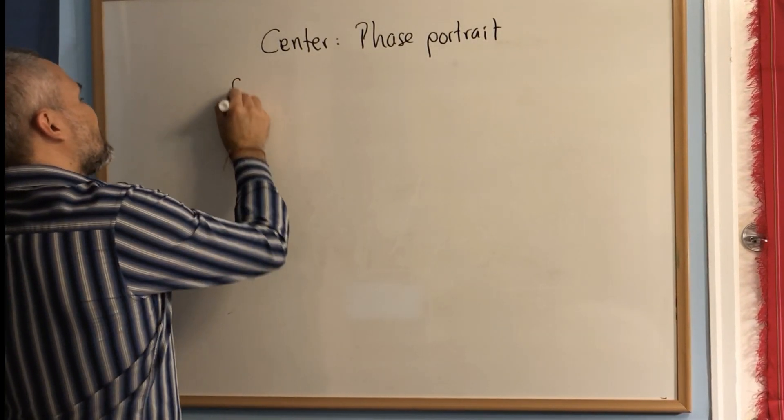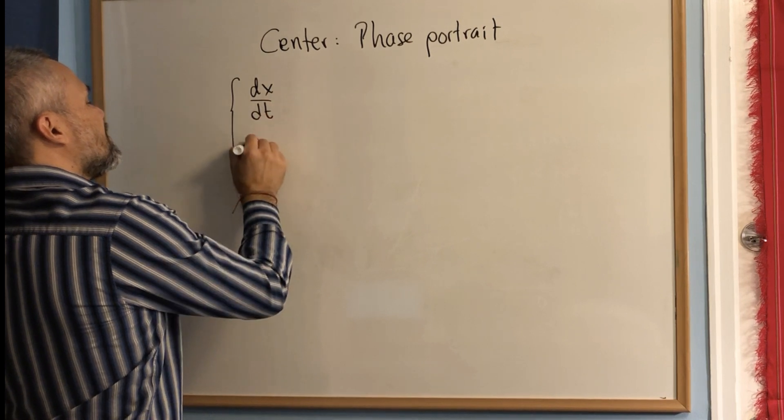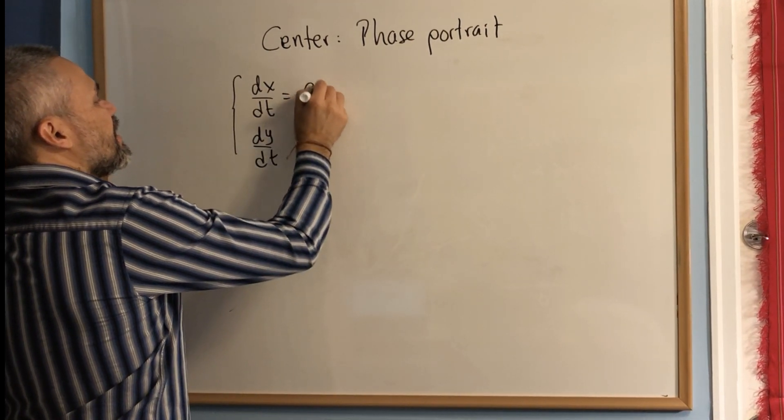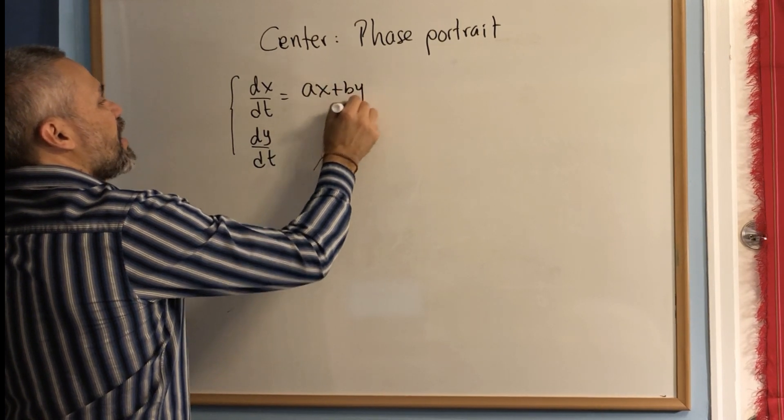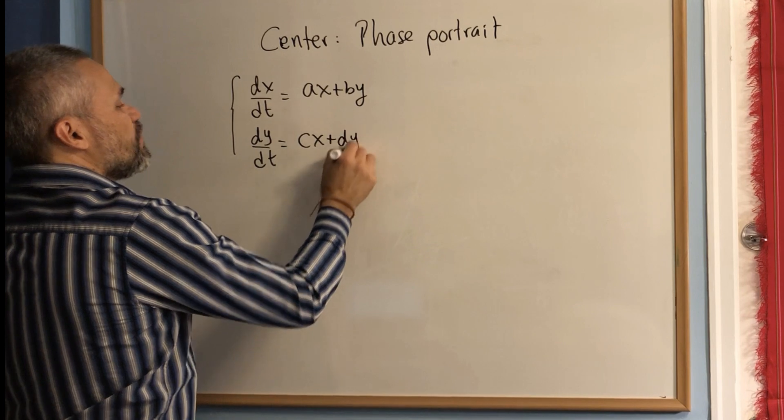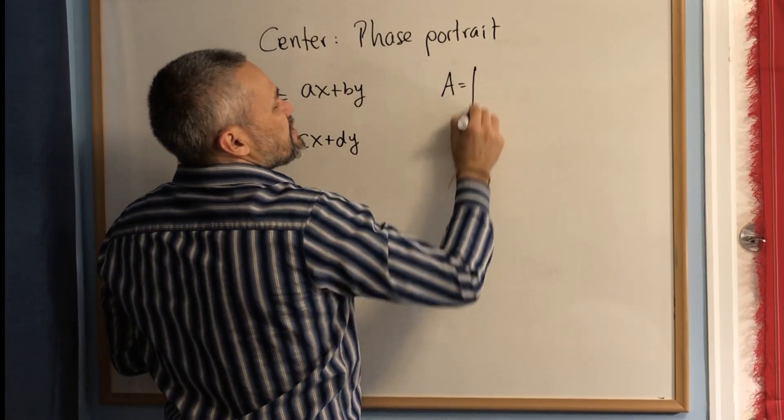If we have a center, that means our system looks like this: dx/dt = ax+by and dy/dt = cx+dy. That means the matrix of the system is [a b; c d].